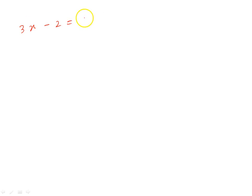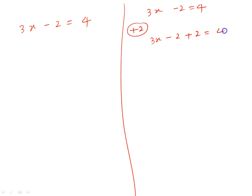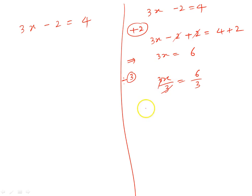Suppose there is the equation 3x minus 2 equal to 4. We will solve this in both ways. Using the earlier approach of adding and subtracting: 3x minus 2 equal to 4. If I add 2 on both sides — minus 2 plus 2 becomes 0 — so 3x equal to 4 plus 2 equal to 6. Now I divide by 3 on both sides: 3x by 3 equal to 6 by 3. The 3s cancel, giving x equal to 2. So x equal to 2 is the solution.